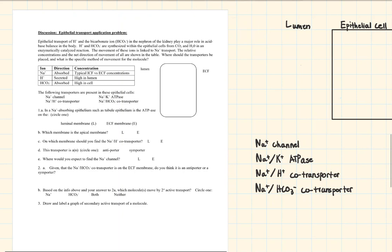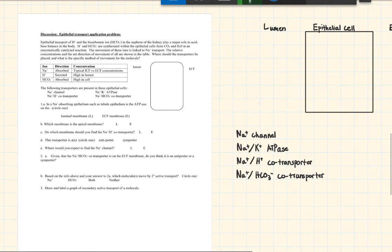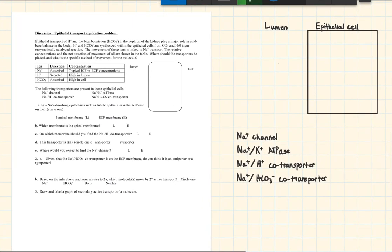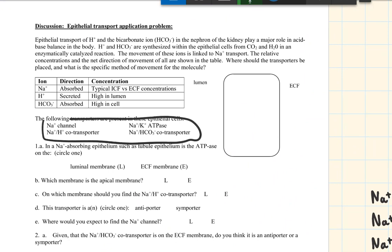This is part two of the membrane transport discussion. I've redrawn the problem to give myself more room. We have a cell with the lumen and the ECF labeled, and we need to build this cell using four transporters to accomplish specific goals — making a model of an epithelial cell that absorbs sodium and bicarb and secretes hydrogen. The concentration gradients for these ions are given in the last column.